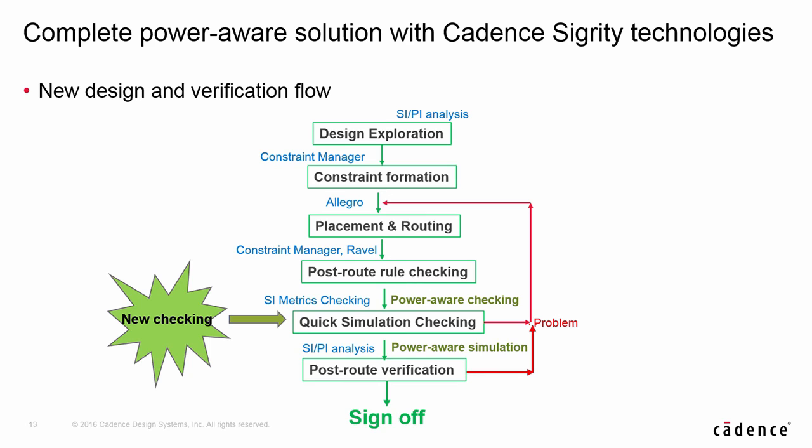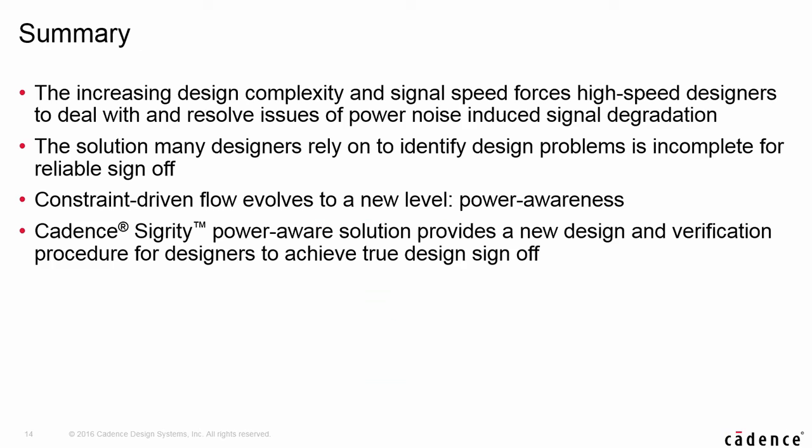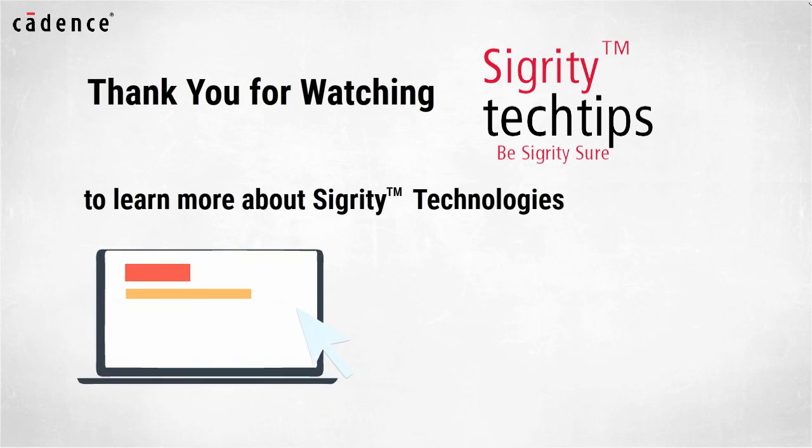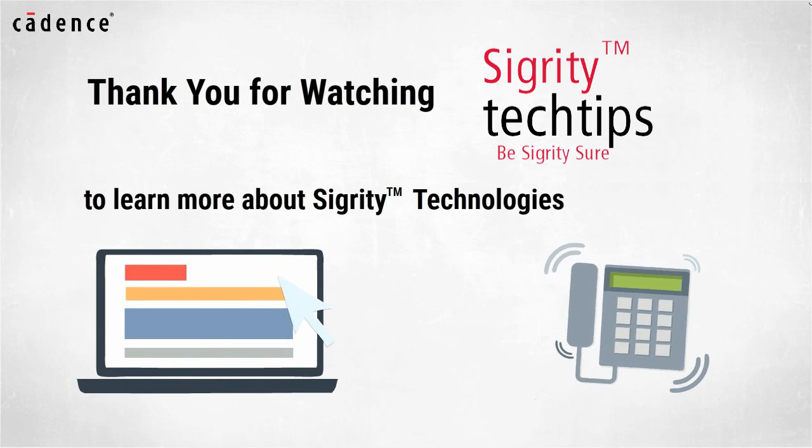Here is the new design and verification flow with power-aware capability. In summary, the constraint-driven flow needs to advance to a new level to account for power-induced noise on signals. Designers should check their current sign-off flow and update it with power-aware functions. Cadence Sigrity tools can help to achieve that goal. Thank you for watching another edition of Sigrity Tech Tips. For information on products used in today's video, click on the links below or contact your local Cadence Sales Representative or Cadence Channel Partner.